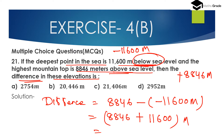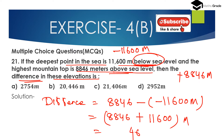So 8,846 minus of minus 11,600. When we add two integers with the same sign, we add the integers first and then place the sign. Minus of minus becomes plus, so 8,846 plus 11,600. Adding: 6 plus 0 is 6, 4 plus 0 is 4, 8 plus 6 is 14, carry 1, 1 plus 1 plus 8 is 10 — giving us 20,446 metres.